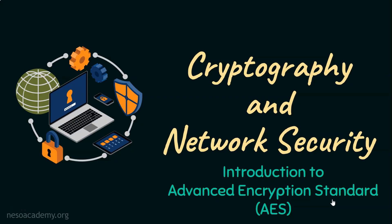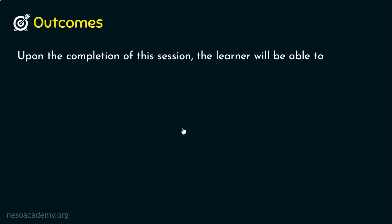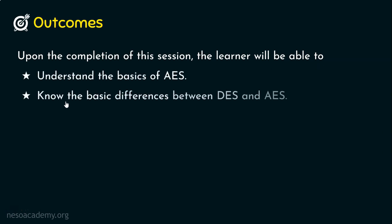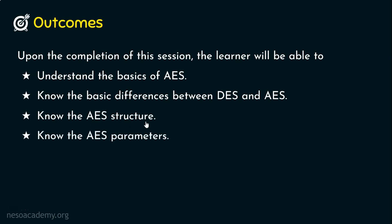Let's dive into the outcomes first. Upon the completion of this session, the learner will be able to: Outcome one, understand the basics of AES. Outcome two, know the basic differences between DES and AES. Outcome three, know the AES structure. And outcome four, know the AES parameters.